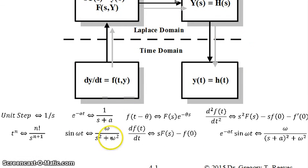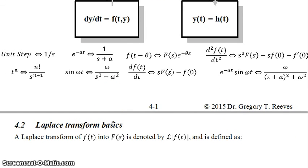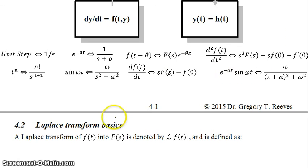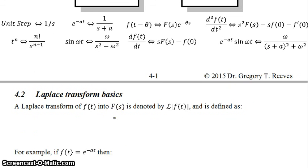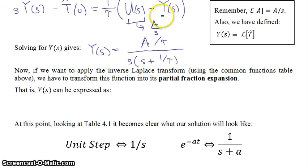The inverse Laplace transform table, shown on the first page of this topic, lists many common functions with their forward and inverse transforms. In particular, we want to use specific entries from that table and put our function into linear combinations of those forms so we can invert it back to the time domain.